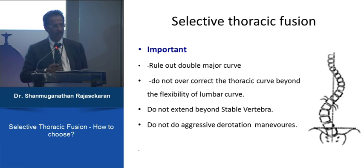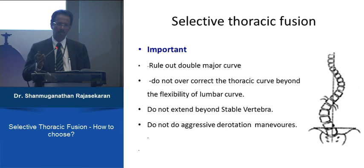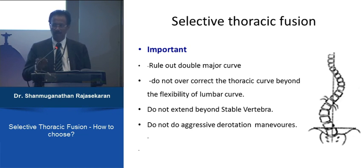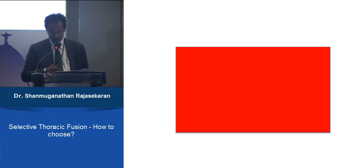The take-home points are: before considering selective thoracic fusion, confirm the curve is Lenke 1C and not 3C, ruling out a double major curve. Do not overcorrect the thoracic curve beyond the flexibility of the lumbar curve — for example, if the lumbar curve is 40 degrees and reduces to 20 on side bending, do not correct the thoracic curve to less than 20 degrees. Do not extend beyond the stable vertebra, and avoid overly aggressive derotation maneuvers.